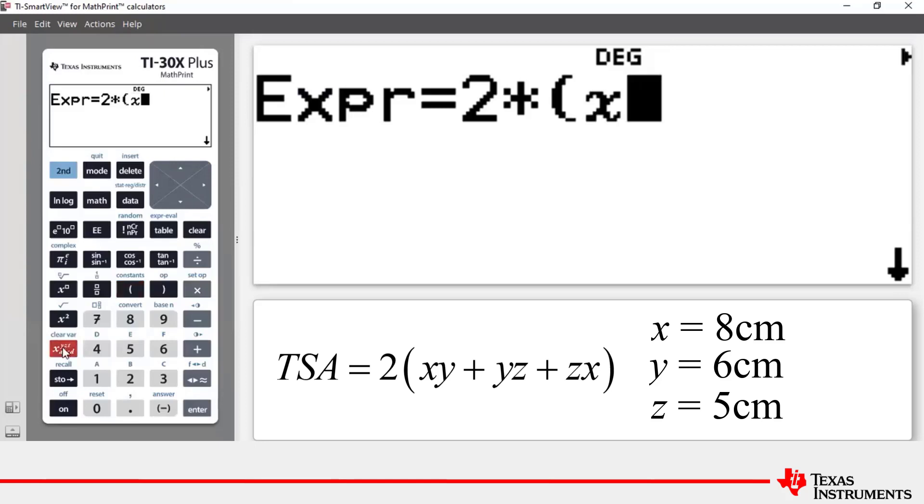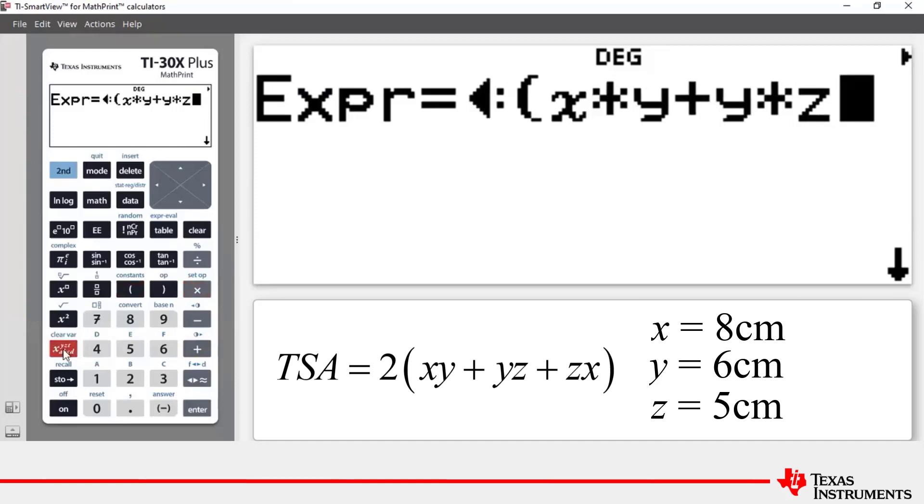Press it once for x, multiplied by, press it twice to get y, plus, press it twice to get y, multiplied by, press it three times for z, multiplied by x, and then close brackets.